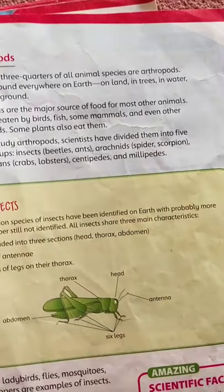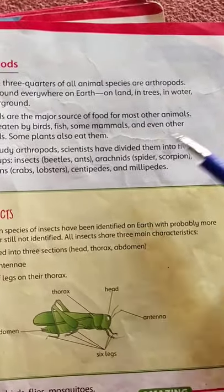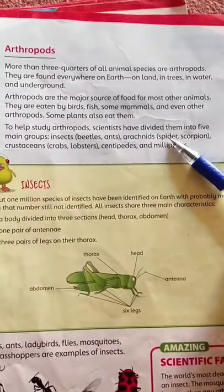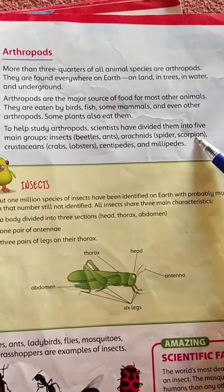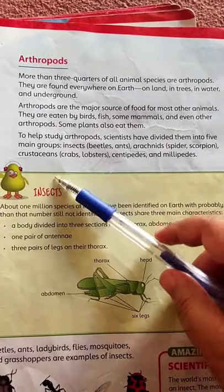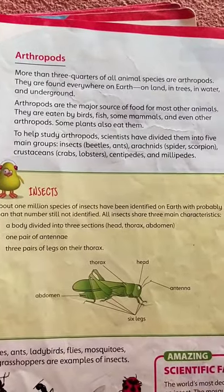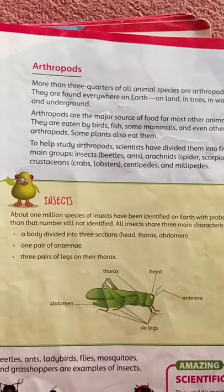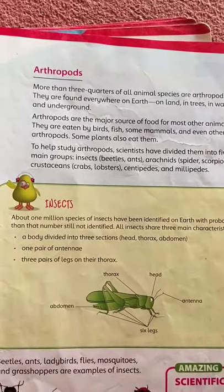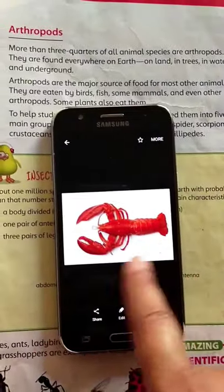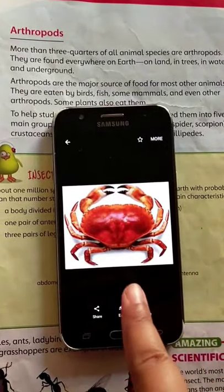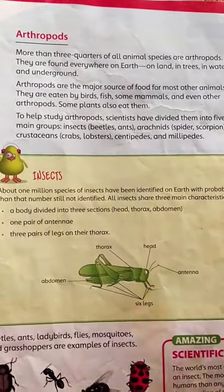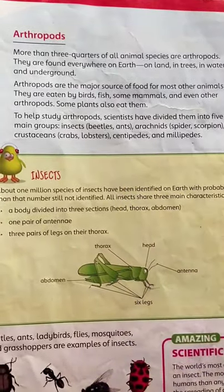The next subgroup is arachnids. Arachnids are arthropods that include spiders and scorpions. The next subgroup is crustaceans. Crustaceans include crabs and lobsters. These are called arthropod subclasses. Along with crustaceans, we also have centipedes and millipedes.